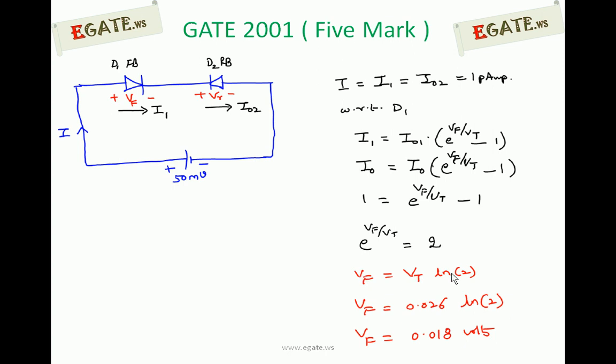Vt is 26 millivolts. Natural log of 2 if you calculate, Vf will be around 0.018 volts. So forward bias voltage is 0.018 volts.